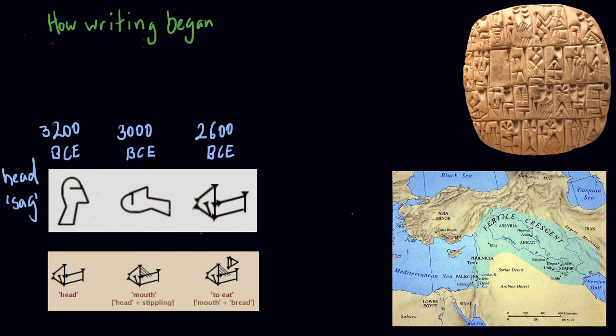And the first writing to develop over 5,000 years ago was Sumerian cuneiform. So that's Sumerian as in Sumer in Mesopotamia or modern day Iraq.